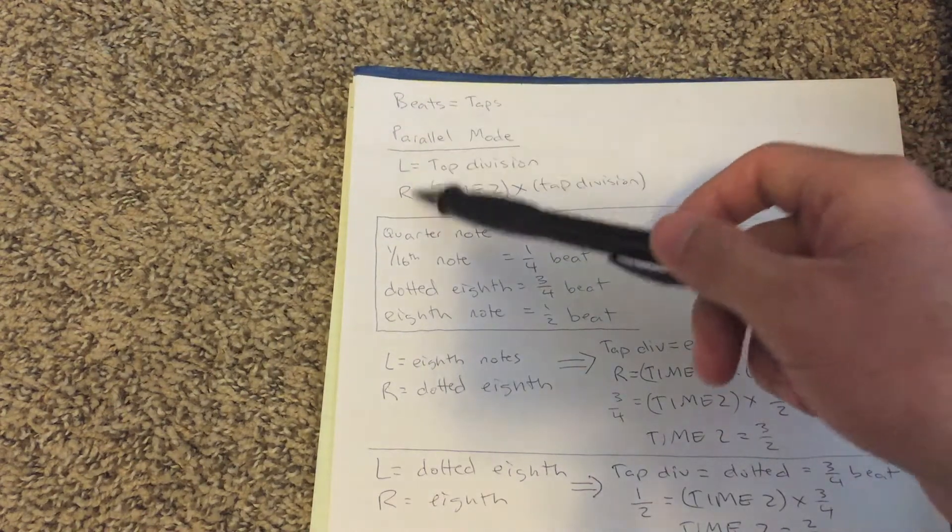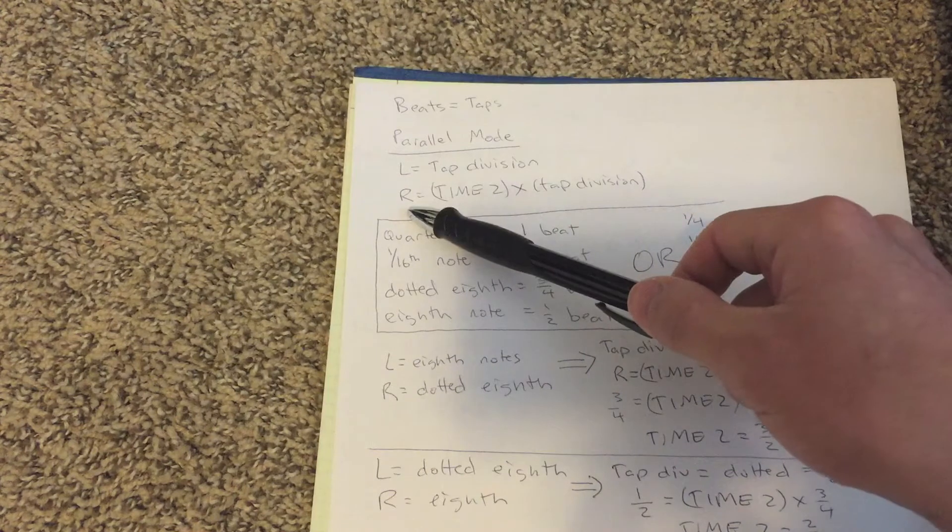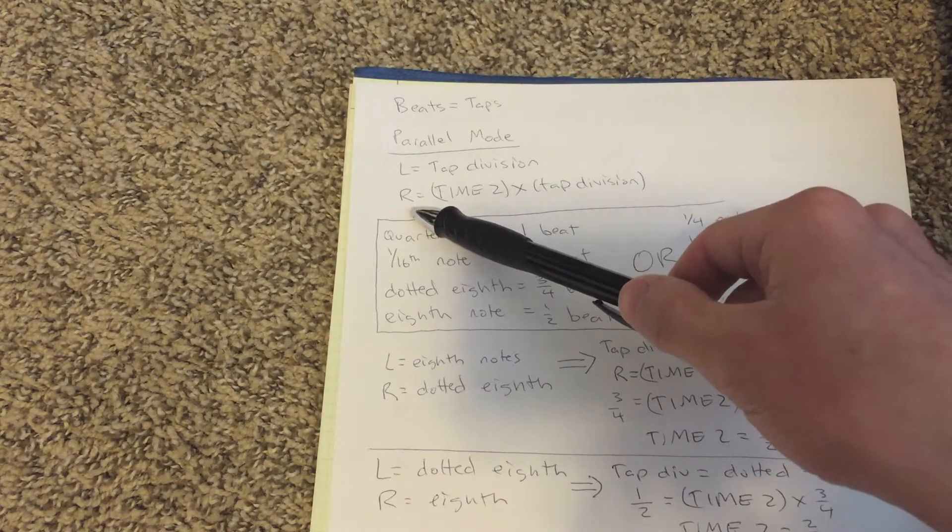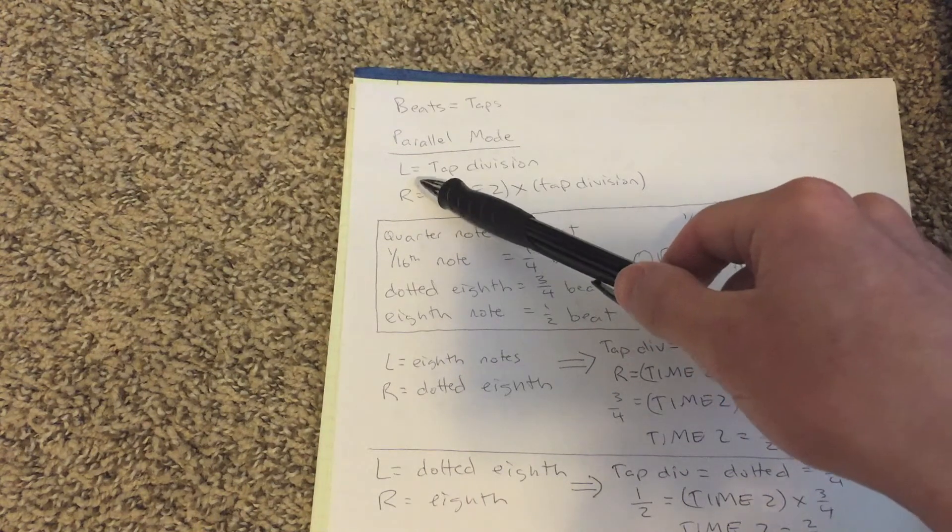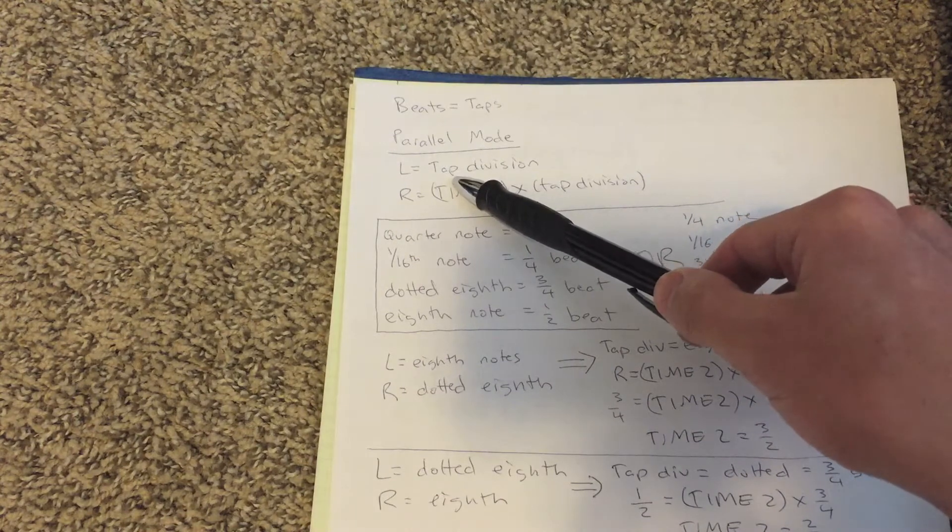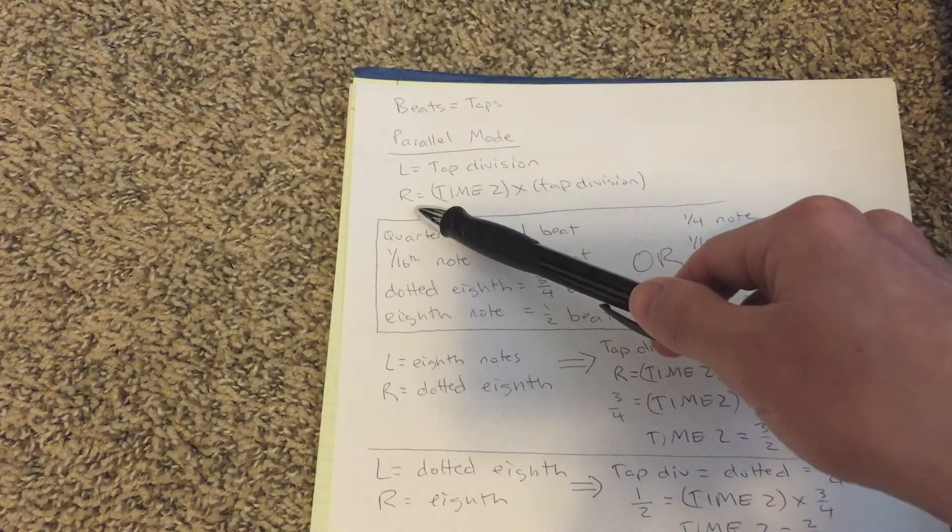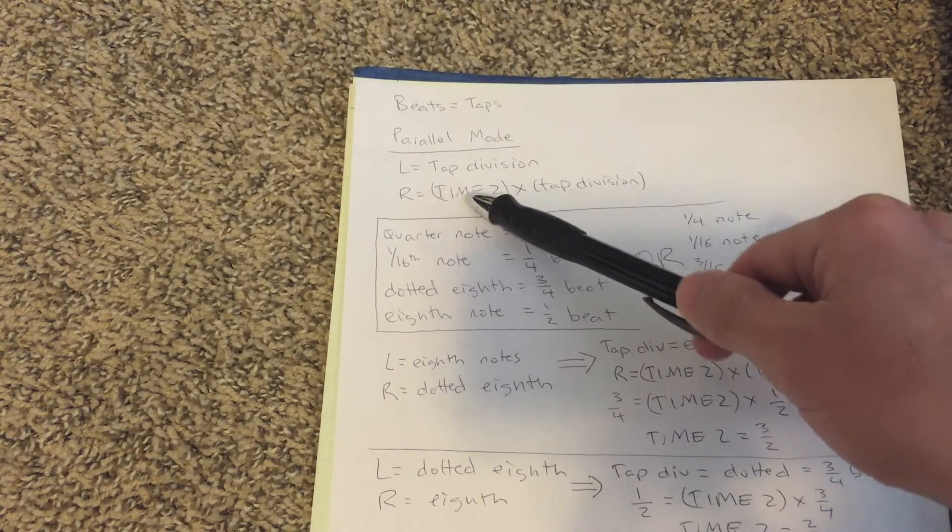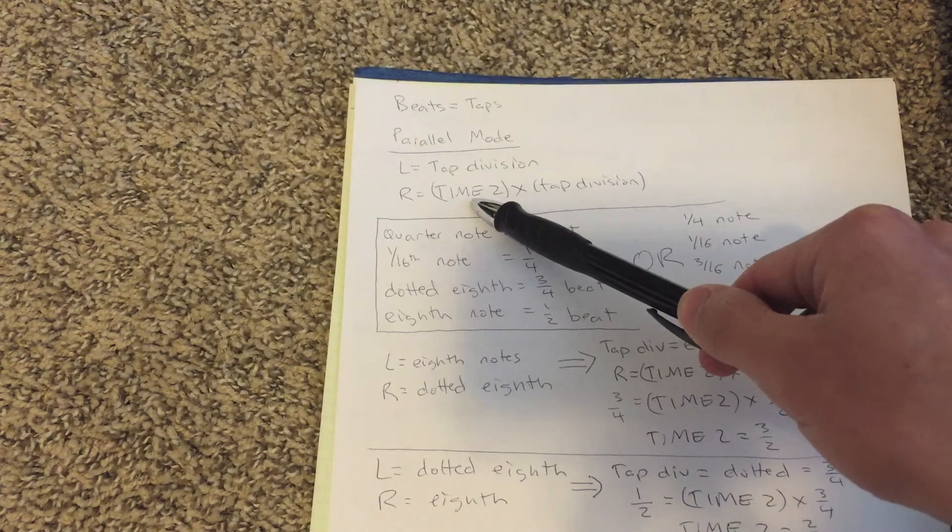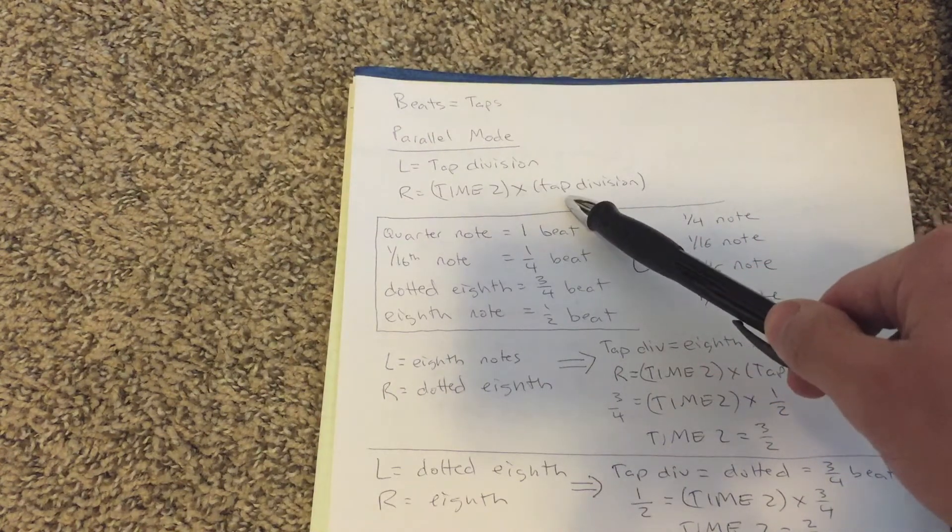So in parallel mode, you have left and right and they're going to come out different tempos. Your left tempo is going to come out whatever your tap division is set to. Your right is going to come out whatever your time two ratio is set to multiplied by the tap division.